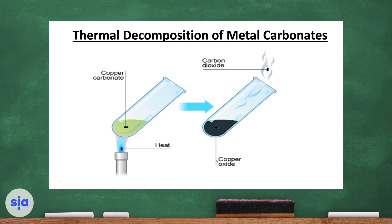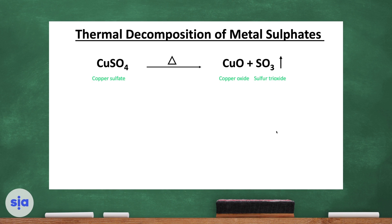As you can see here, this test tube contains green copper carbonate. When we heat it, it produces black copper oxide and carbon dioxide gas. Notice that we use heat in all of our thermal decomposition reactions, and that a compound with different elements bonded together is broken by heat into different products.